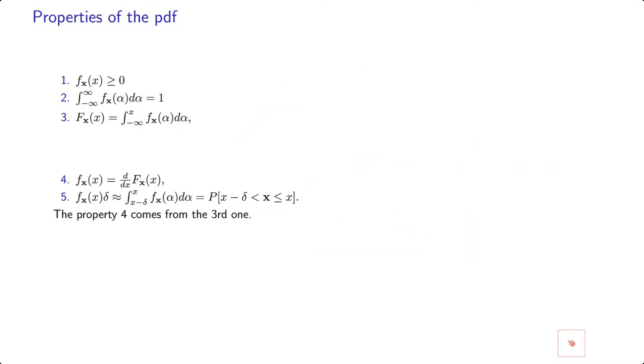Property 4 comes from the third one, and they are interrelated. Remember that the pdf is not a probability itself. f_X of x shall be non-negative, but it could be bigger than 1, because when you multiply by delta, f_X of x multiplied by delta, this is probability.